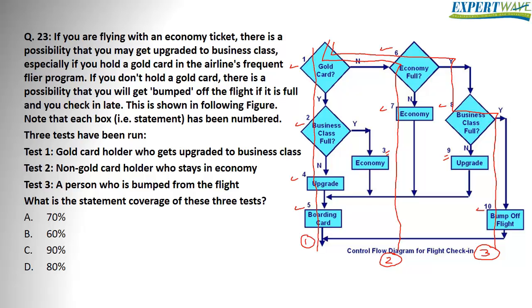Under our drawing, we run through statements one, two, four, five, six, seven, eight, and ten — a total of eight statements. So we have exercised eight statements out of ten statements. That's 80%. So the correct answer is D, 80%.